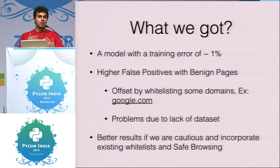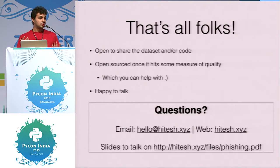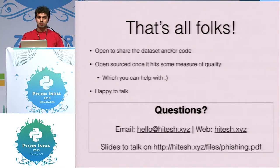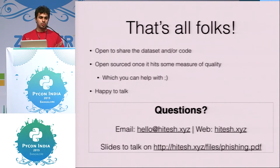Static features rely on just the URL text without examining the webpage content. Dynamic features involve looking at the HTML of the page and deciding whether it is legitimate. Once this meets some quality measure, it will be open source, so it is accessible and usable by everyone who could fall victim to phishing.